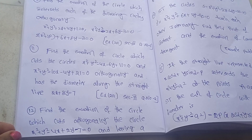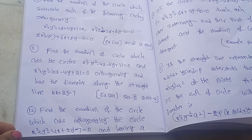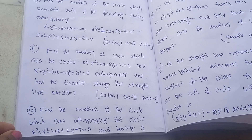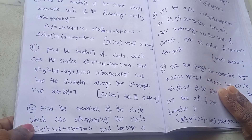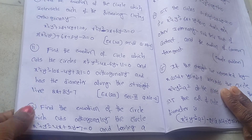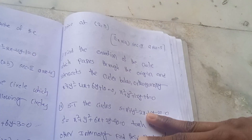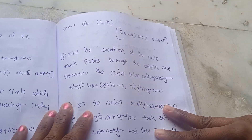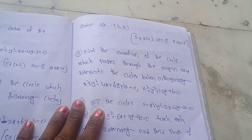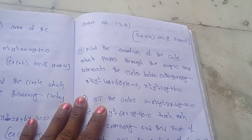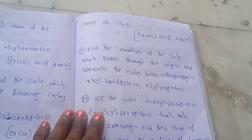Next, find the equation of the circle which cuts orthogonally the circle x² + y² − 4x + 2y − 7 = 0 and has its center at (2, 3). This is Exercise 2A, Section 2, Question 5.